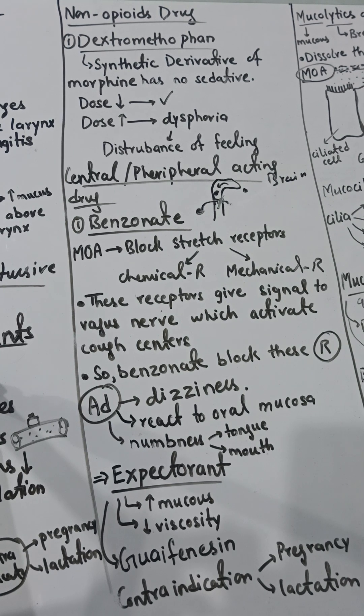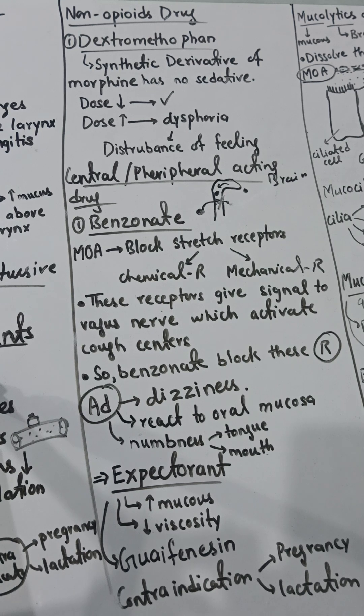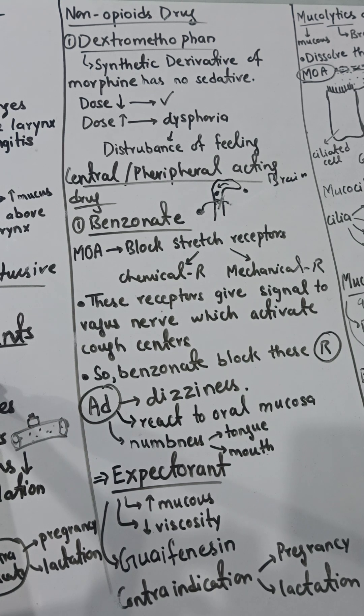We have now covered all antitussive drugs and their classifications. The second type of anti-cough agent is the expectorant — let's now discuss what expectorants are.